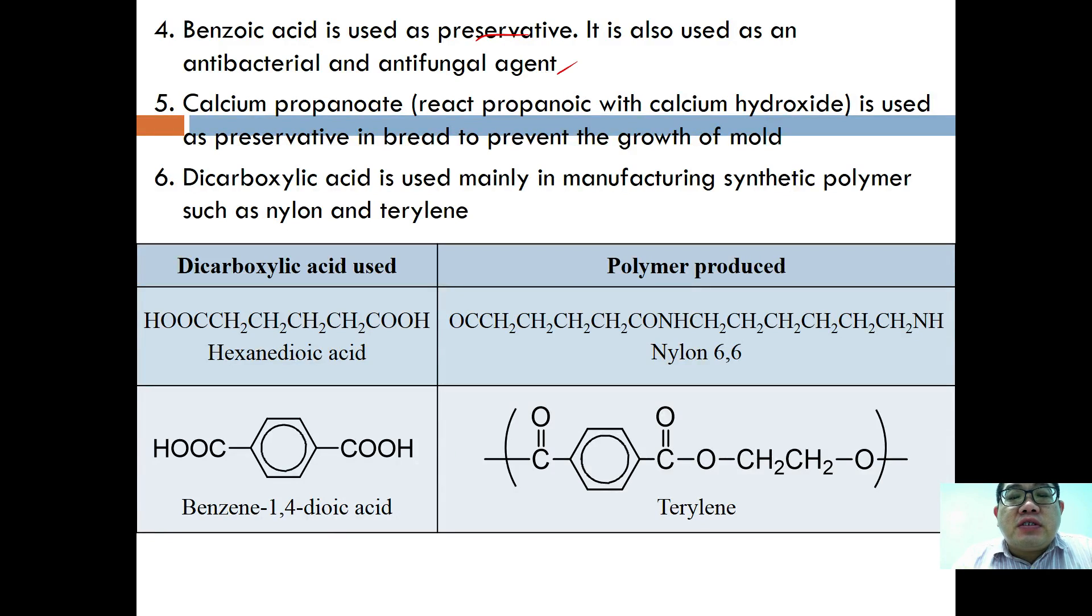Calcium propanoate is used as a preservative in bread to prevent growth of mold. Carboxylic acid is used to manufacture synthetic polymers such as nylon and terylene. For nylon you use hexanedioic acid, and for terylene you use benzene-1,4-dicarboxylic acid. These are a few examples of applications for carboxylic acid.